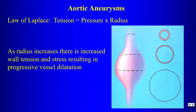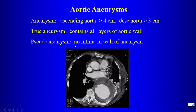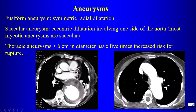Starting with aortic aneurysms, we know by the law of Laplace that as the radius of the blood vessel increases, the tension on the wall increases, which increases the risk of rupture. For the aorta, our definitions are: aneurysm of the ascending aorta is greater than four centimeters, descending aorta greater than three centimeters. A true aneurysm contains all layers of the aortic wall; a pseudoaneurysm has no intima in the wall.